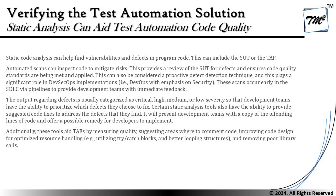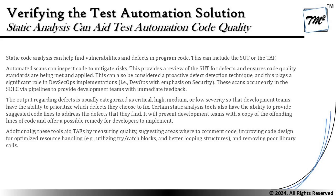Severity categorization allows development teams to prioritize which defects to fix. Certain static analysis tools also have the ability to provide suggested code fixes to address defects. They present the development team with a copy of the offending lines of code and offer a possible remedy for developers to implement. This is optional yet important — static analysis tools may have additional capabilities giving recommendations on which part of the code should be rectified, the remedy to fix the problem, and suggested outcomes, such as auto-suggested secure coding practices.